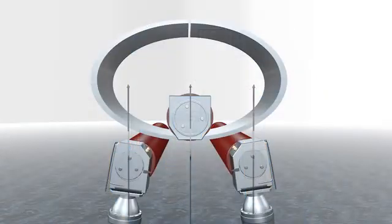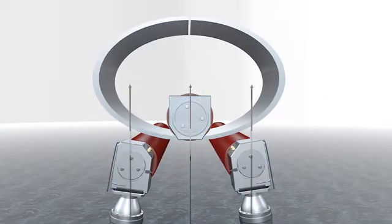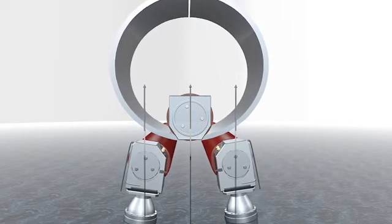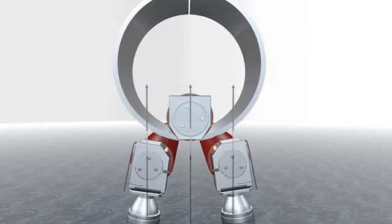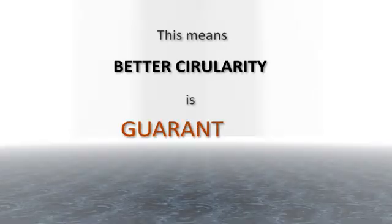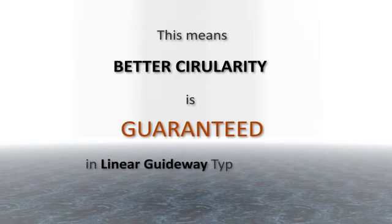It is a scientific fact that circularity of the shell is better if the axis of bottom rolls is near to the top roll axis. For same capacity, vertical axis of bottom rolls in Linear Guide Way Type Machine is nearer to top roll axis compared to Swing Guide Type Machine. This means better circularity of the shell is guaranteed in Linear Guide Way Type Machine.